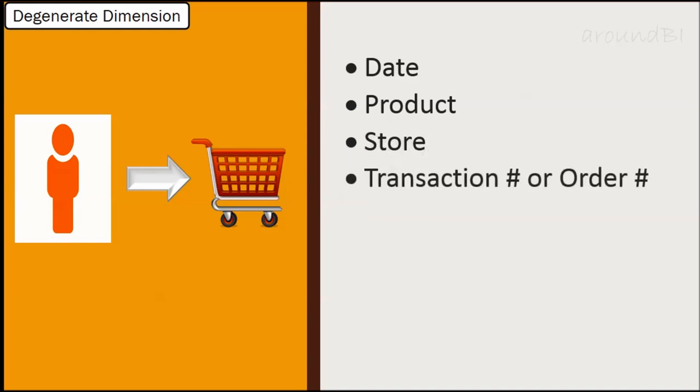Let me explain it with an example. In retail sales operation, we store data about transactions. We store date when the sale happened, product that is sold, store where it is sold, transaction number or order number, and quantity and unit price.